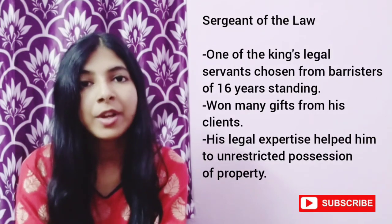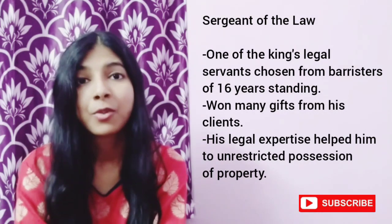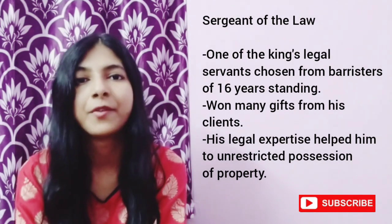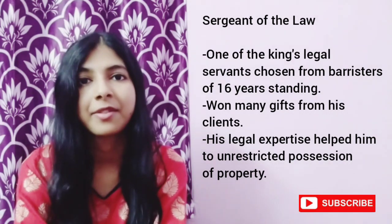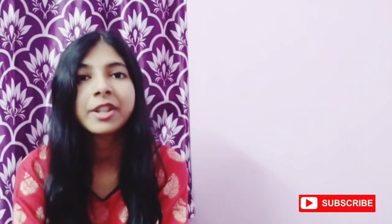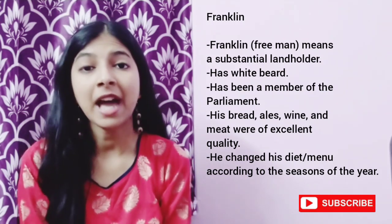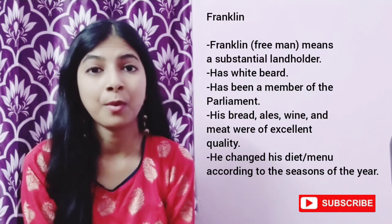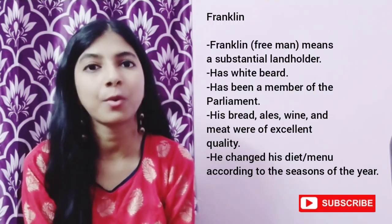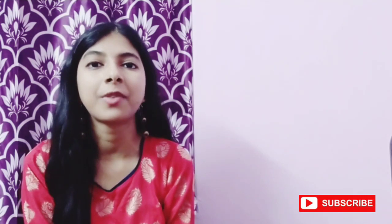The next pilgrim is the Sergeant of the Law, one of the king's legal servants chosen from barristers of 16 years of standing. He is very rich and gets lots of gifts from his clients. He buys a lot of land, and his legal expertise helps him to gain unrestricted possession of property. The next pilgrim is the Franklin — the free man — meaning a substantial landholder. He has a white beard, and his bread, ales, wine and meat are of excellent quality. He has been a member of parliament and changes his diet according to the seasons of the year.